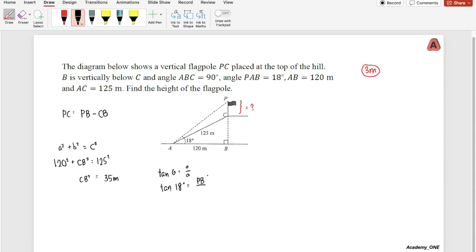Let me rearrange it. PB equals 120 multiplied by tan 18 degrees. So I get my length for PB as 38.99 meters.